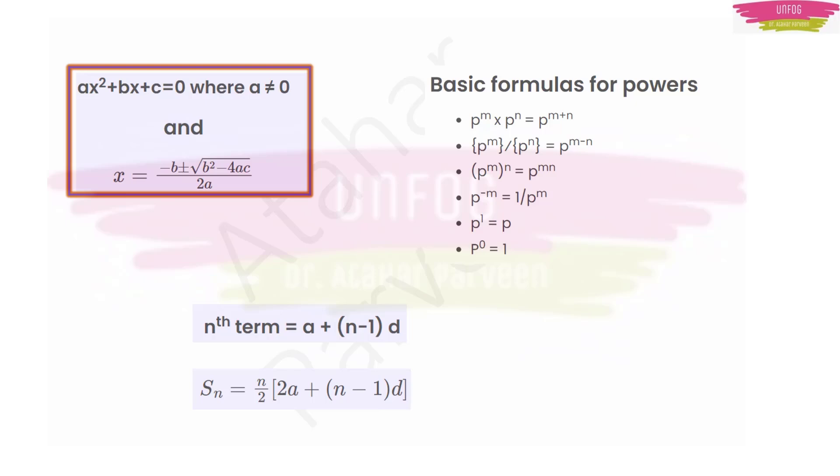Then you have some basic formulas in indices or powers, where you can see how you can do the product if you have the same basis and different powers. At that instance, you are going to add the powers. If you are going to do division, at that instance, you are going to subtract the powers. And if you have the power in the denominator, then you can bring it up by writing minus sign. And anything to the power 1 is the same number.